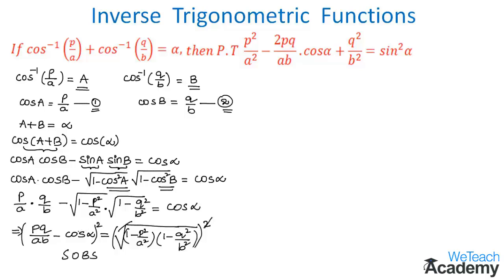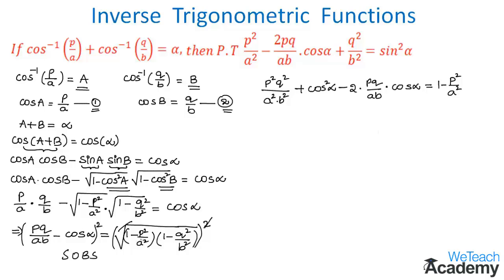The left-hand side is in the form (A − B)², so applying the formula gives: P²Q²/A²B² + cos²α − 2(PQ/AB)cos α. On the right-hand side, multiplying out: 1 − P²/A² − Q²/B² + P²Q²/A²B².